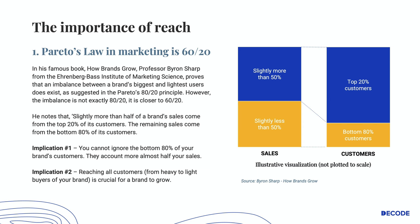Professor Byron Sharp in his famous book 'How Brands Grow' shows that there is indeed an imbalance between the biggest and lightest users of a particular brand. However, that imbalance is not 80/20 as Pareto suggested — it is actually 60/20. Slightly more than half of a brand's sales comes from the top 20% of its customers, and the remaining sales come from the bottom 80%. That means you cannot ignore the bottom 80% of your brand's customers — they account for almost half of your sales.